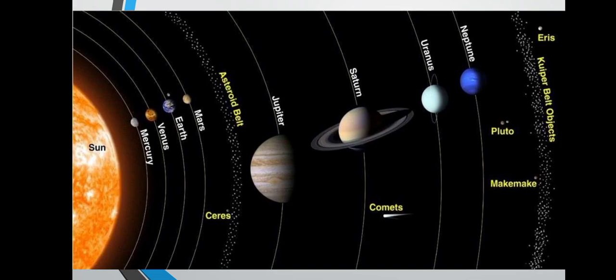As you can see here, the sun is at the center, then the four inner planets: Mercury, Venus, Earth, Mars, then the asteroid belt, and then the four outer planets: Jupiter, Saturn, Uranus, and Neptune, along with comets and asteroids. These will be discussed later.